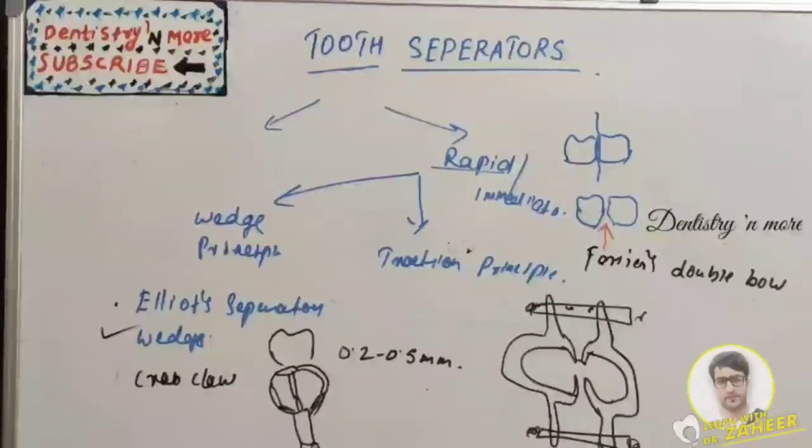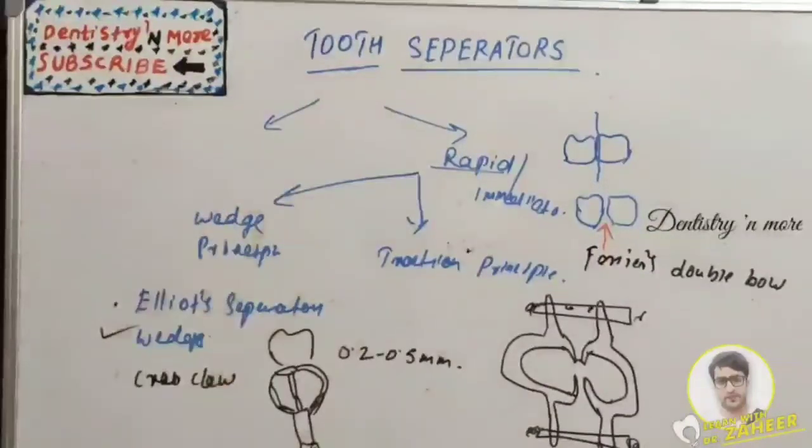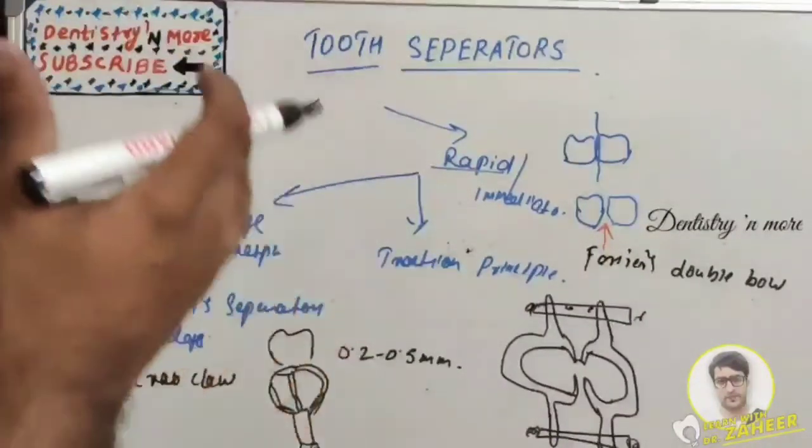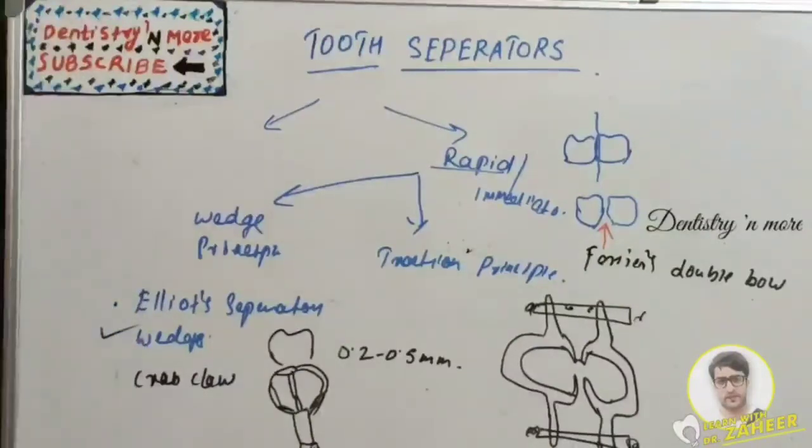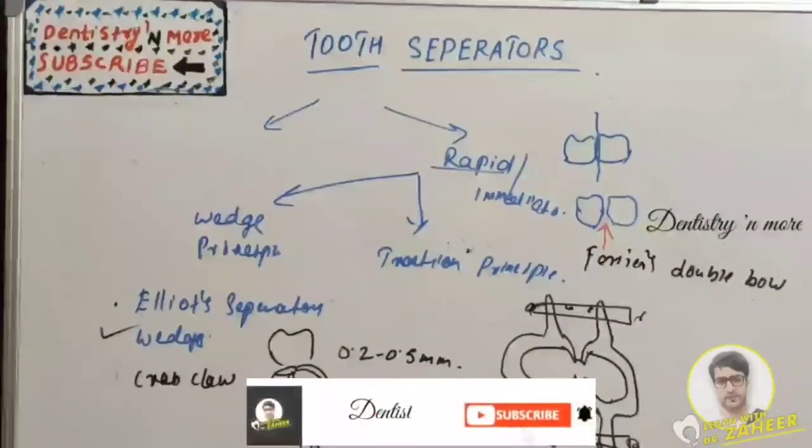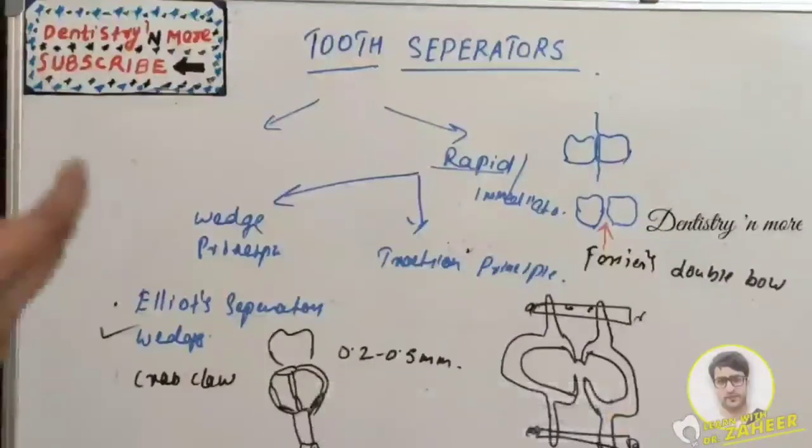Next we have matrices, which I will be dealing with in my next video. This was about tooth separators. We have slow separators and rapid separators. Slow separators, we learned various methods: rubber dam, rubber sheets, various wires, copper wires, ligature bands, and gutta percha points, temporary crowns.